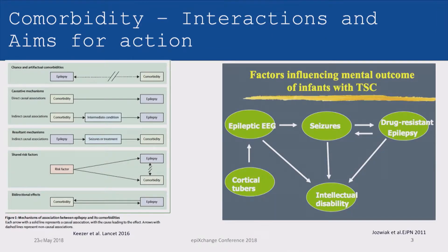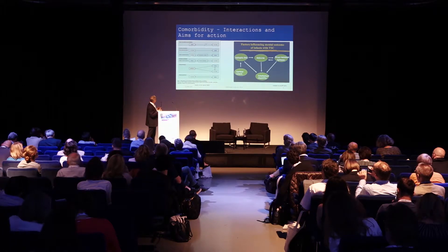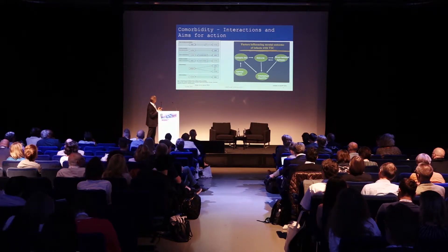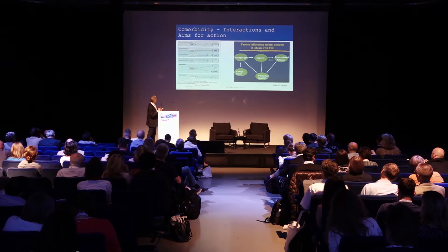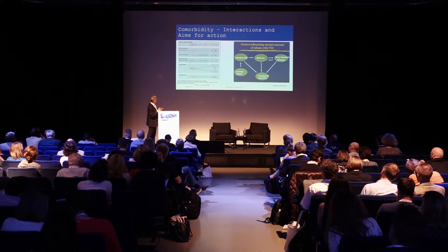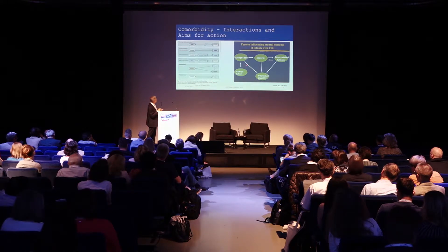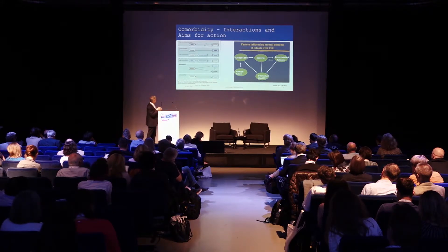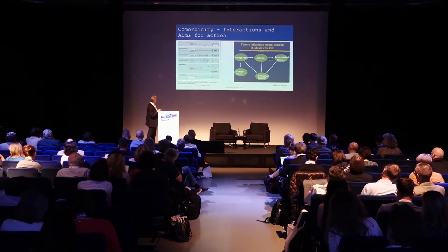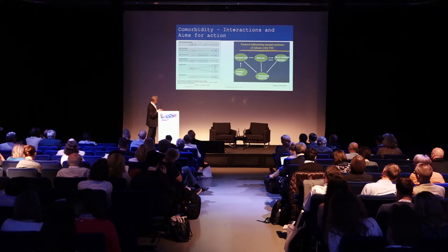There are different associations between epilepsy and comorbidities, represented in a graph published in Lancet in 2016. There is chance and artifactual comorbidity with no established interaction. There is a causative mechanism where comorbidities may provoke epilepsy. Conversely, epilepsy and seizure treatment may lead to comorbidity. There are also shared risk factors — for example, cortical tubers causing both seizures and intellectual disability independently — as well as bidirectional effects.